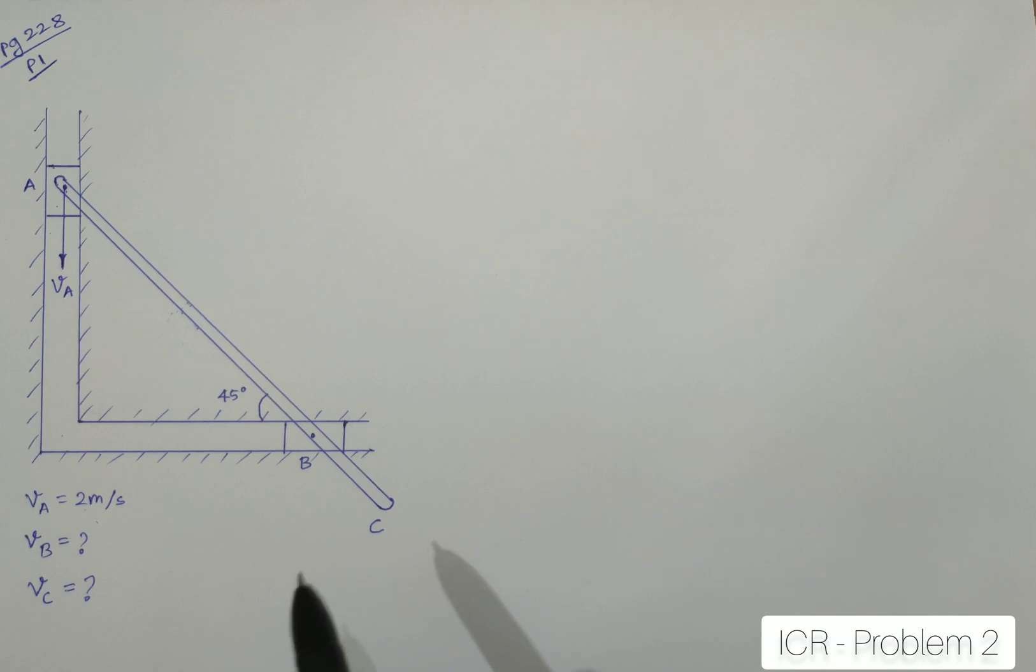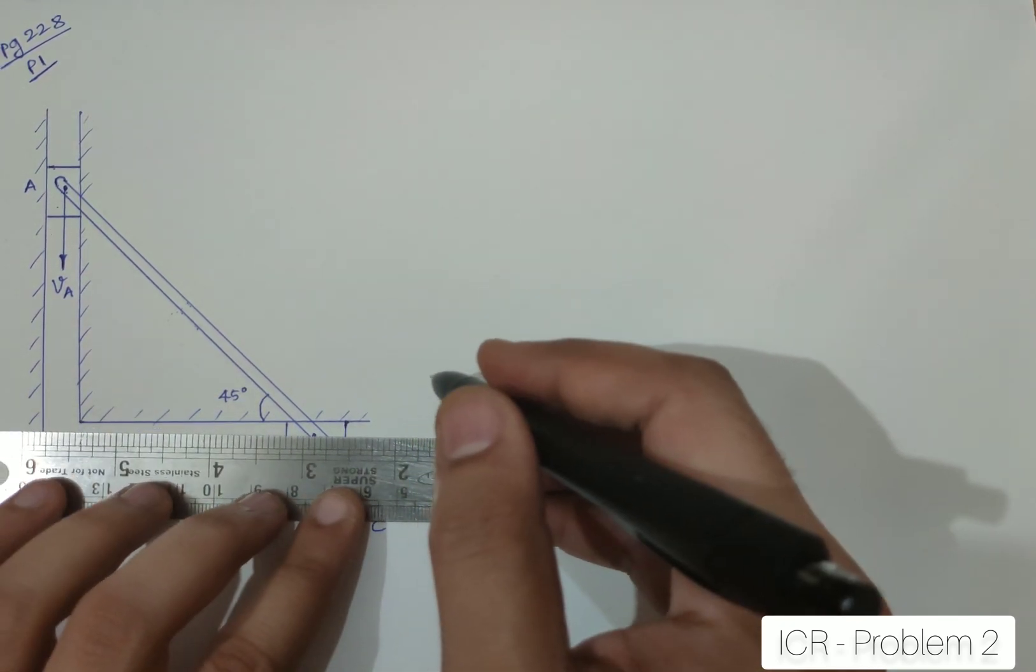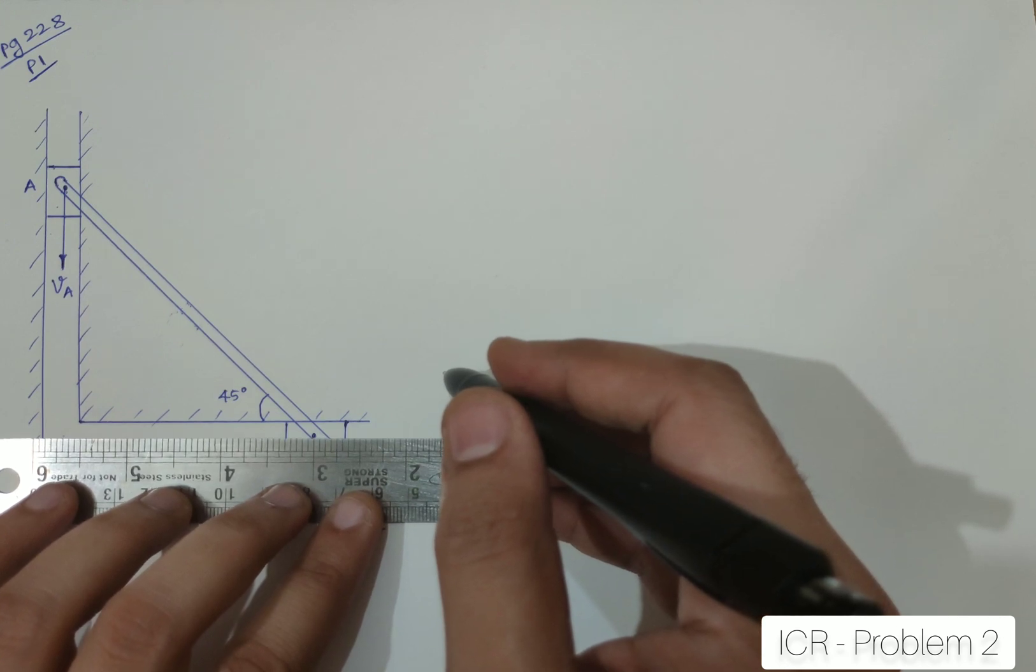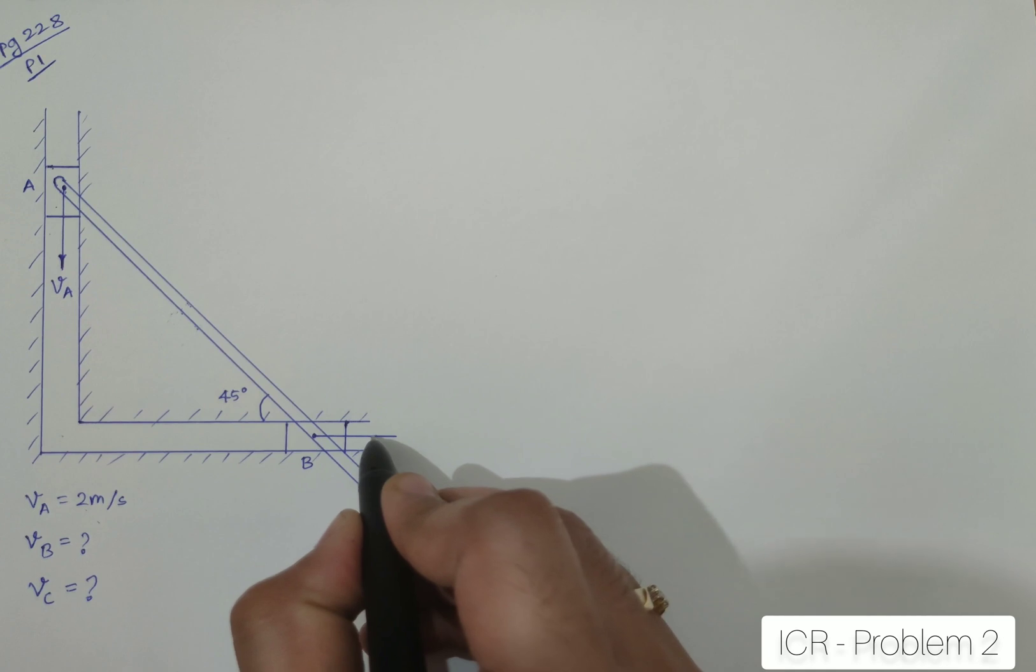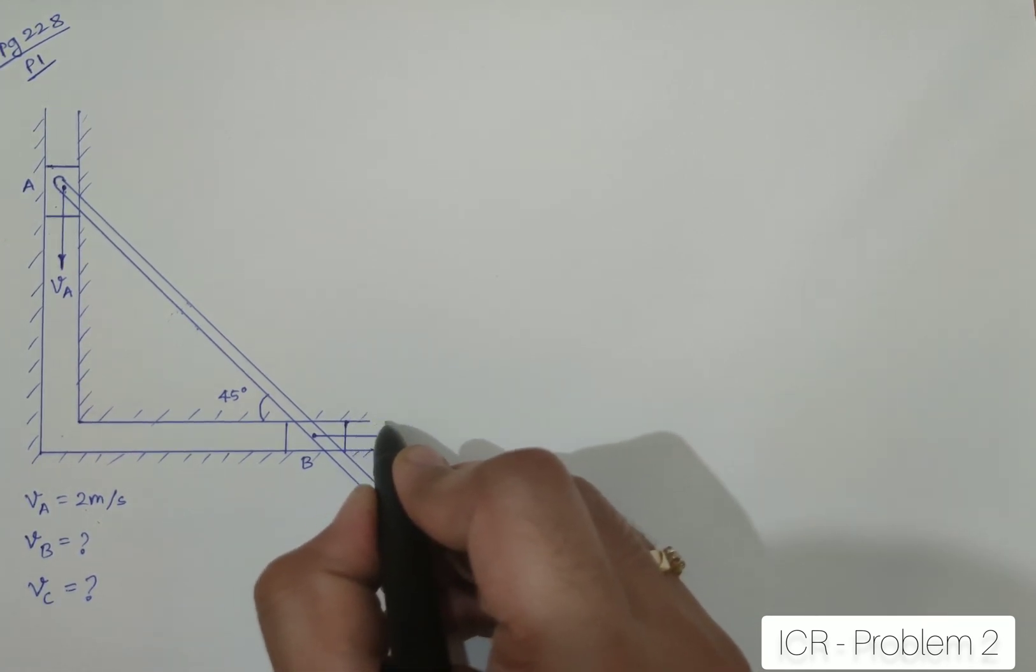So, I hope by now you have paused the video and got the velocity VB. So, let me just draw the velocity VB over here for you. Velocity VB, since it is constrained in this given slot, it has to move in the horizontal forward direction. So, this is my velocity VB.